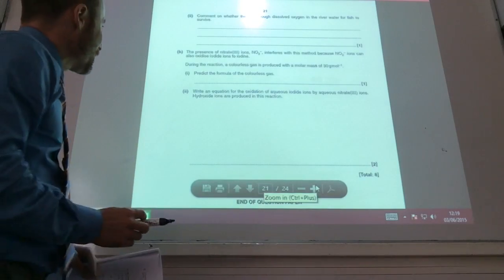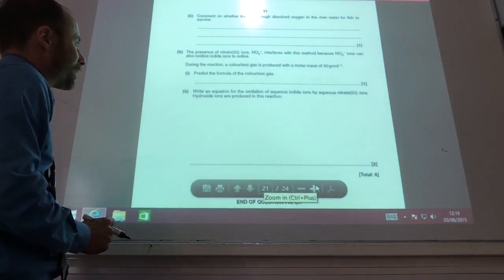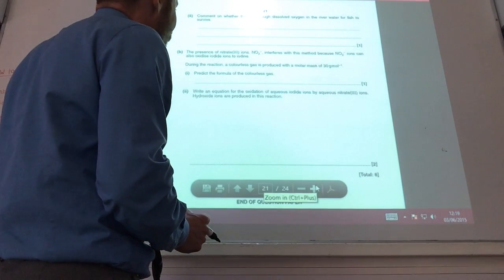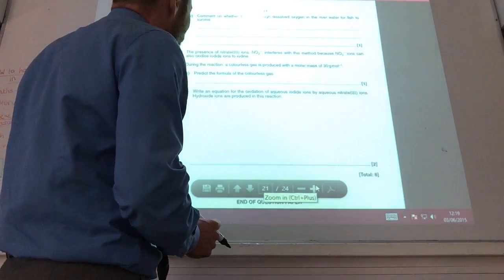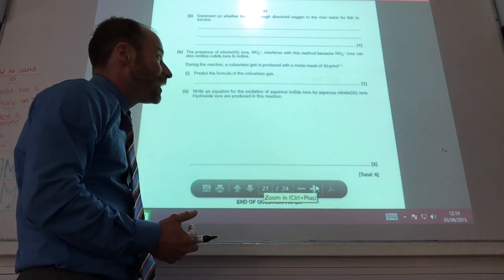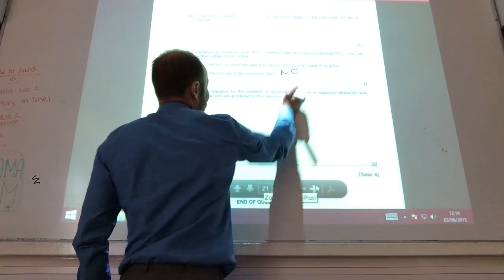Well, the next one then. The presence of nitrate 3 ions interferes with this method because they can oxidize iodide to iodine. Colorless gas is produced for a molar mass at 30. Predict the formula. You've got nitrogen, you've got oxygen going around. Nitrogen is 14, oxygen is 16. So the formula is likely to be NO, nitrogen monoxide.